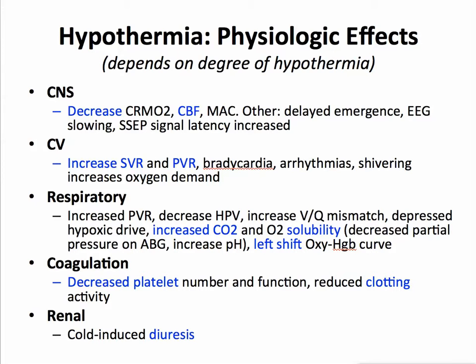As the temperature goes down, bradycardia frequently occurs. Dysrhythmias, specifically things like ventricular premature beats, as well as a prolonged PR interval and junctional dysrhythmias. Shivering — the shaking of the muscles, especially with re-warming — can increase oxygen demand significantly and cause myocardial ischemia.